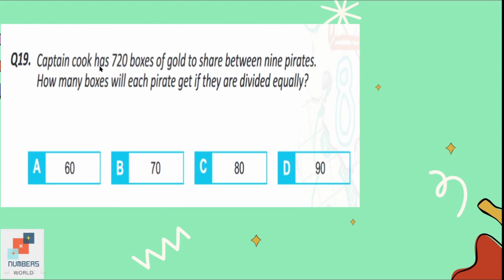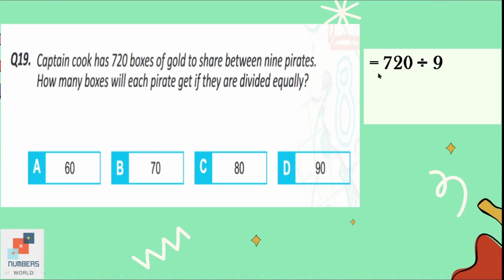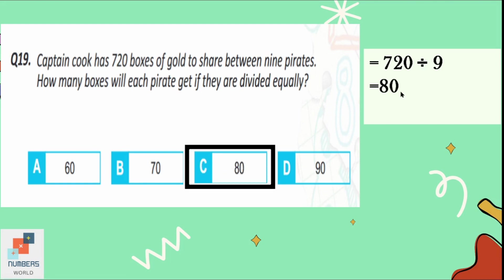Question number 19: Captain Cook has 720 boxes of gold to share between 9 pirates. How many boxes will each pirate get if divided equally? Dividing 720 by 9: 9 × 8 = 72, bringing down the 0 gives 80. Each pirate will get 80 boxes of gold. Option C is correct.